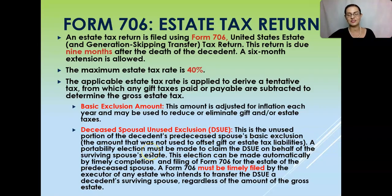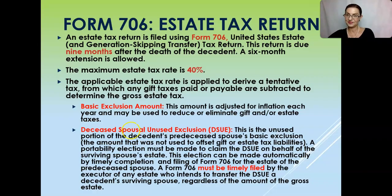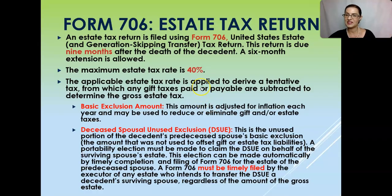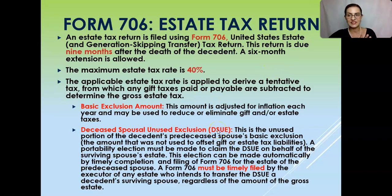This is the portability election. The survivor can say, 'My deceased spouse didn't use that up, so I'm going to port it over to me.' If the surviving spouse elects the DSUE and transfers that unused exclusion to themselves, their estate tax exclusion is going to be higher because they're taking the unused exclusion their deceased spouse didn't use. It's always a good idea to elect the DSUE, especially if you have two wealthy spouses.